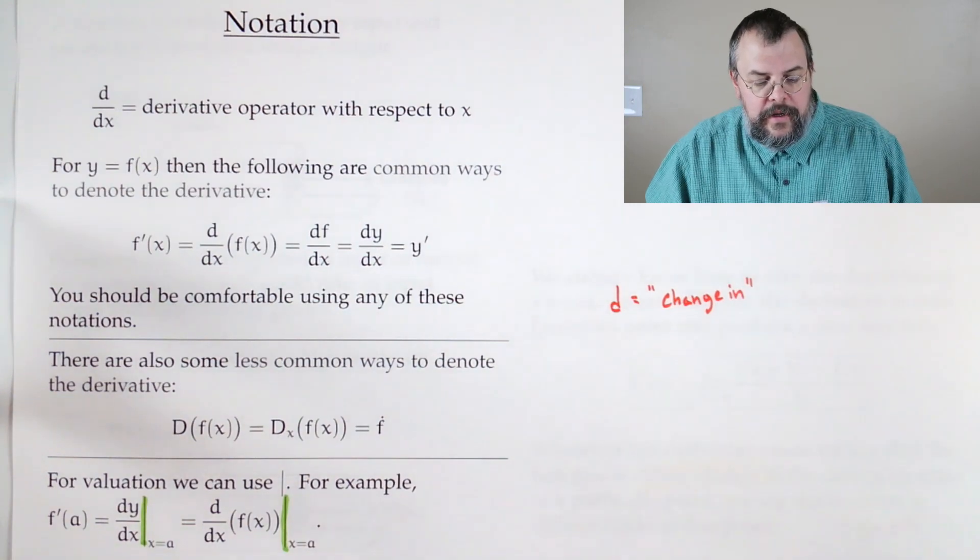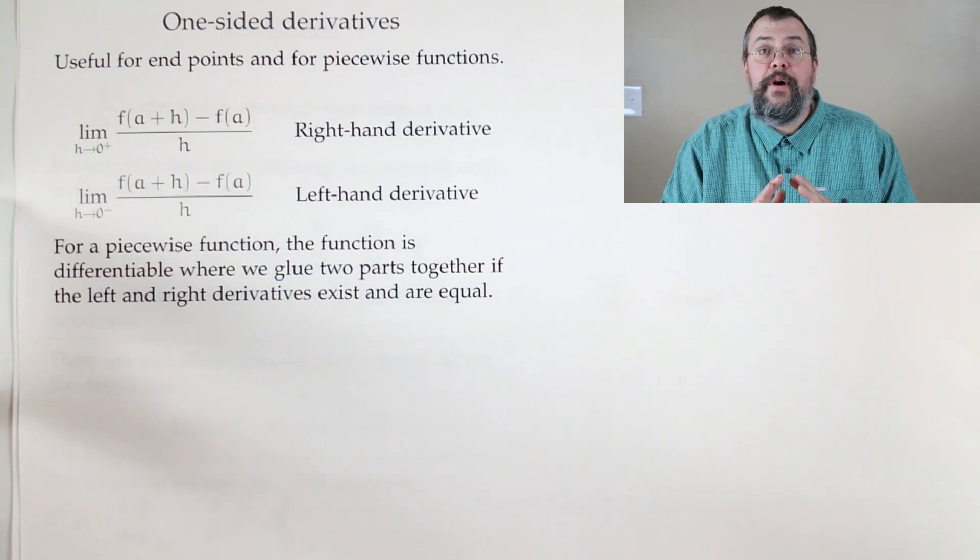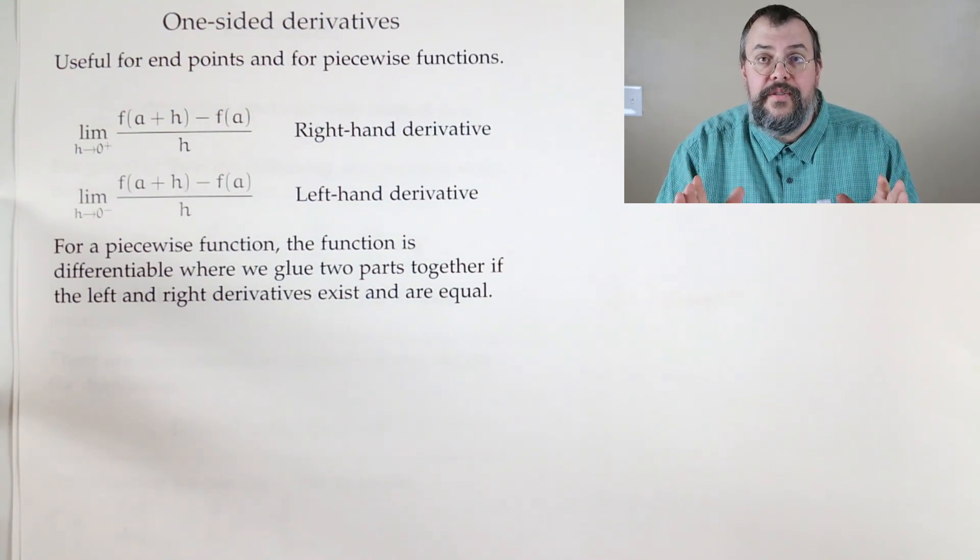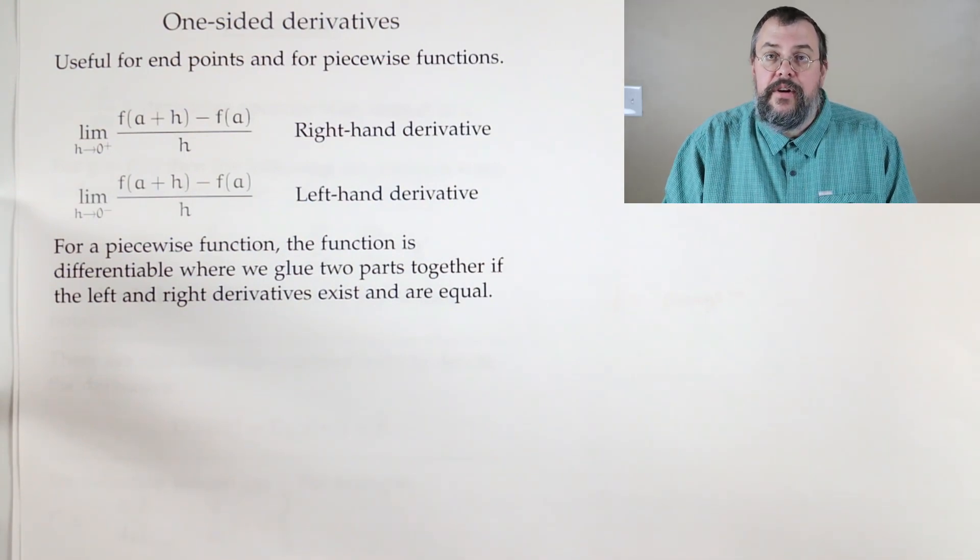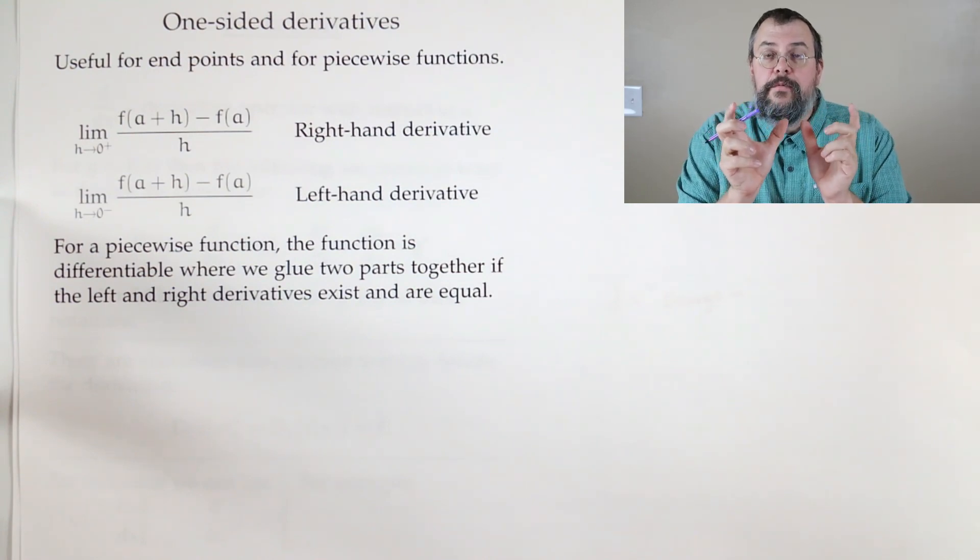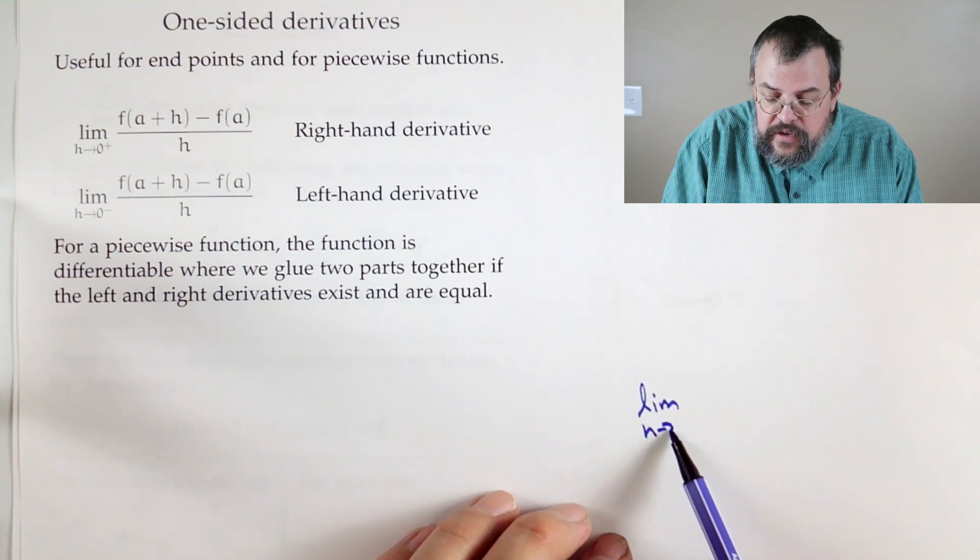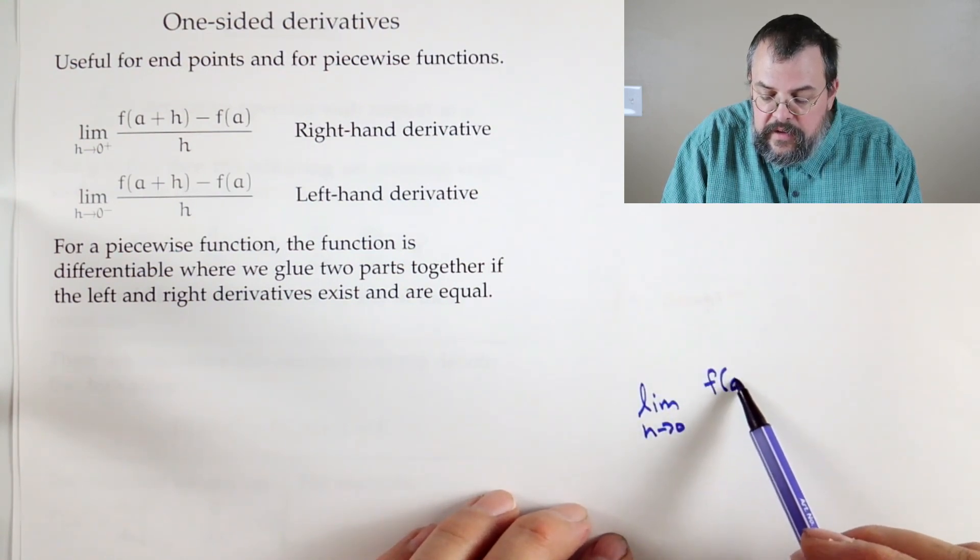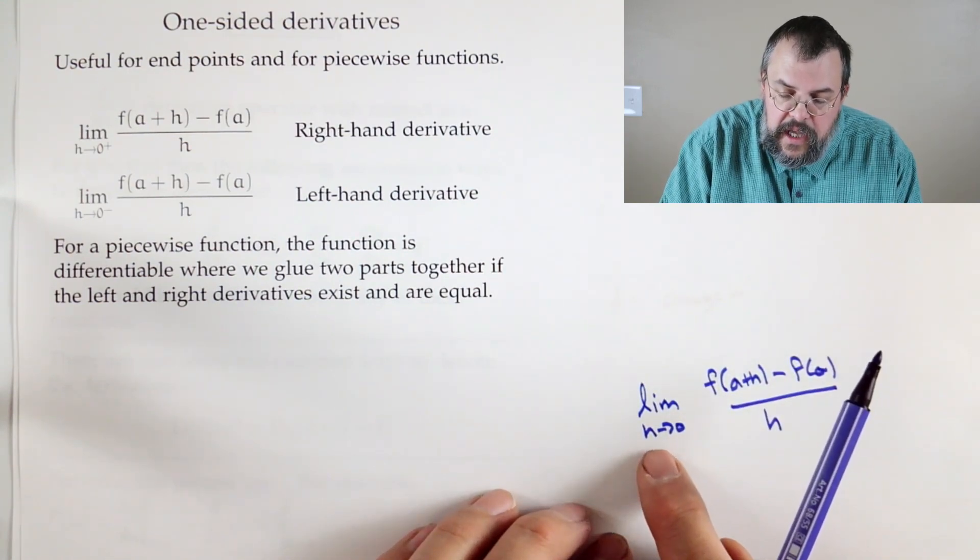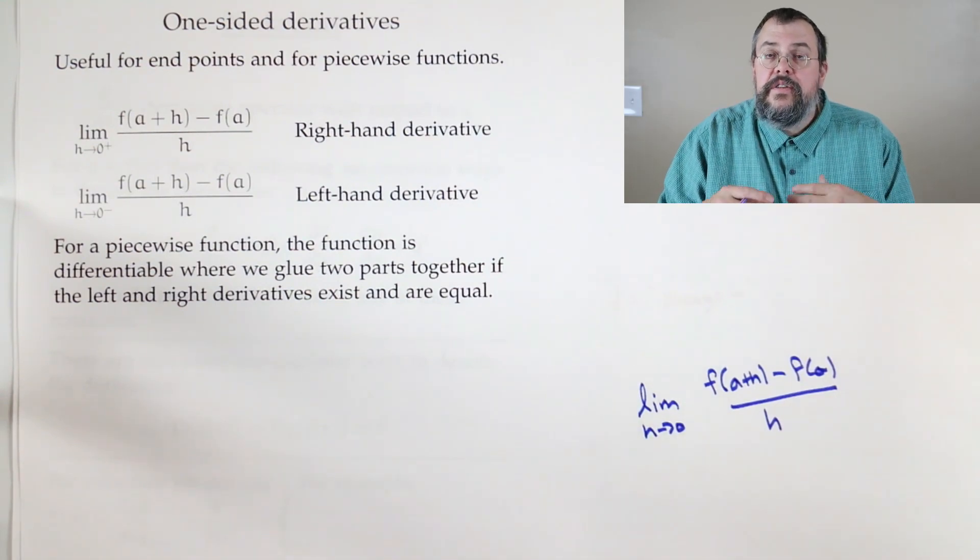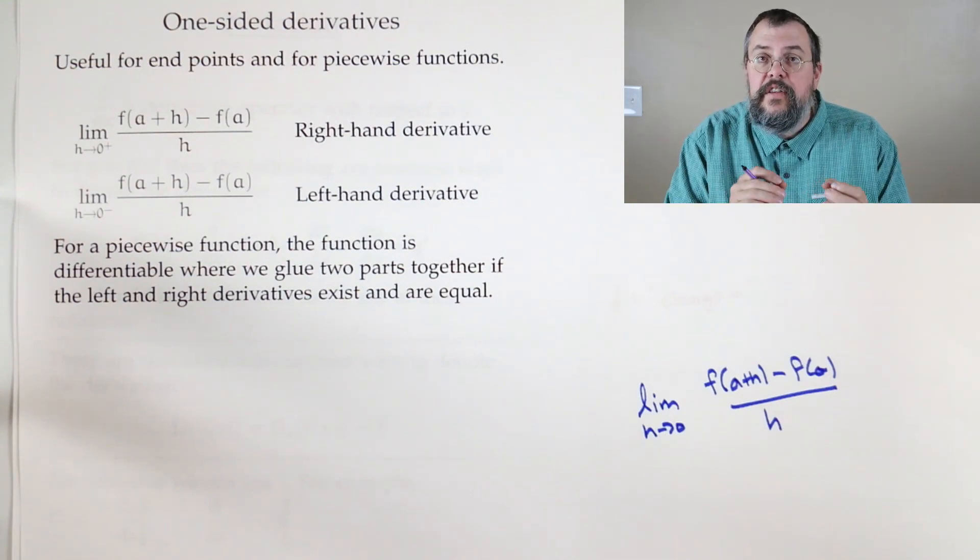All right. Well, a few more things to talk about. So we've talked about derivatives. We can also talk about one-sided derivatives. Now, what's the difference? Well, sometimes you might not be able to take a derivative at a point, because, say, it's only defined on one side. If you think about the definition, you have the limit as h goes to zero of f of, let's say, a plus h minus f of a, all over h. Now, this h could be positive or negative. And so I can't necessarily talk about what's happening on both sides, because they may have different behaviors.